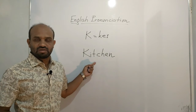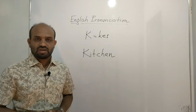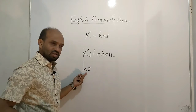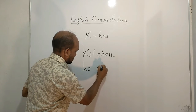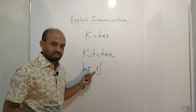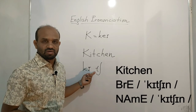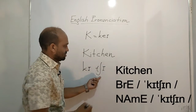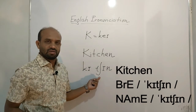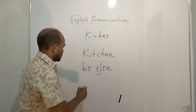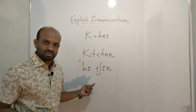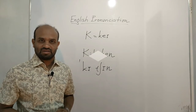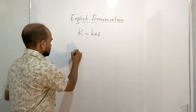Many call this word 'kitchen' — let's see the accurate pronunciation. This is the pronunciation symbol that makes the sound 'ch'. The word is 'kitchen'. On the first syllable a stress is applied. The sound is 'kitchen', not 'kitchen'.